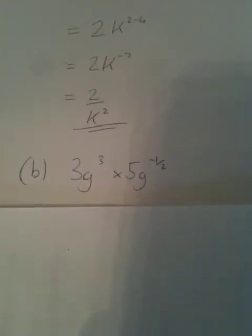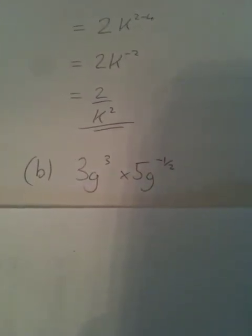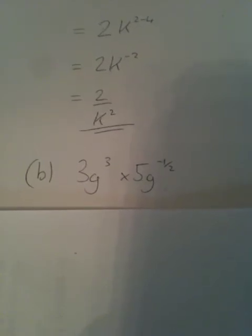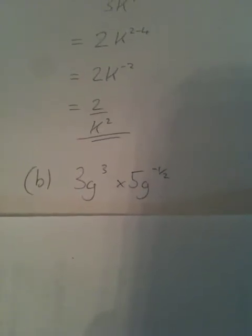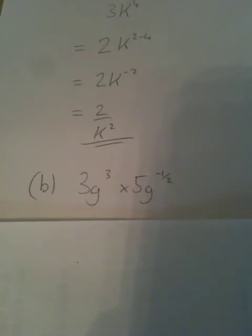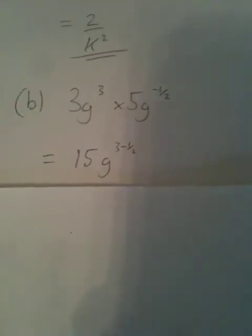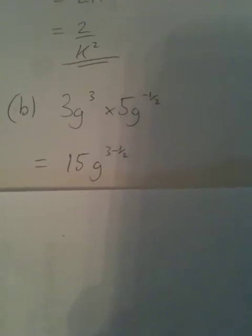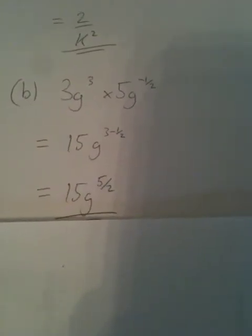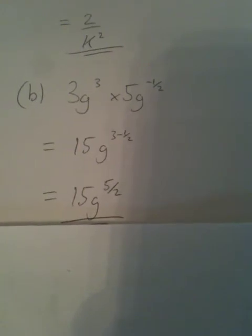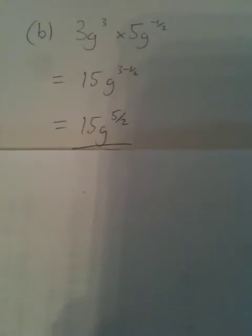Part B: we're multiplying here, so we do the normal numbers first — 3 times 5 is 15. When multiplying powers, we just add the exponents together. So that will be 15g to the 3 + ½, which is 15g to the 2½, which can also be written as 15g to the 5/2. We prefer top-heavy fractions when doing the laws of indices, rather than mixed numbers.